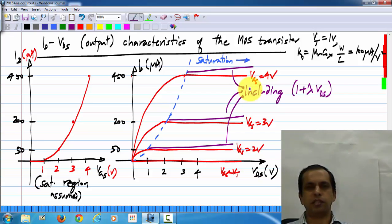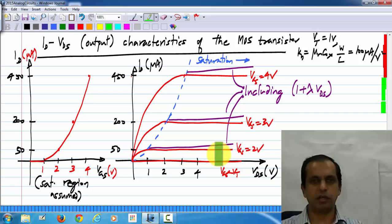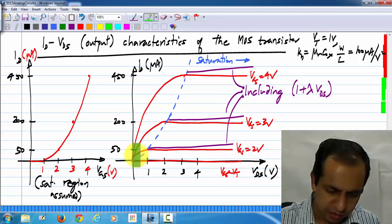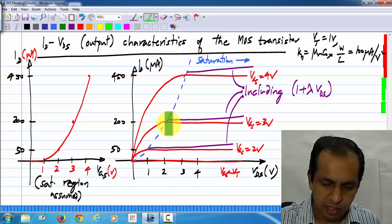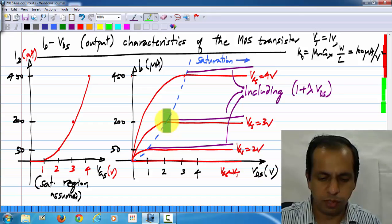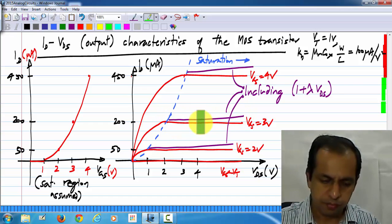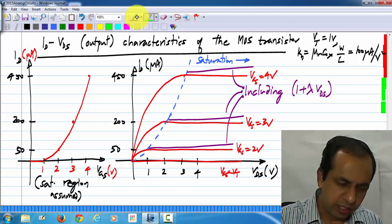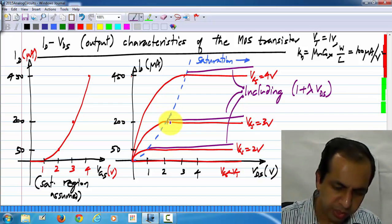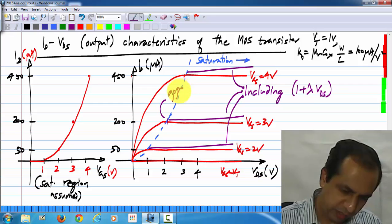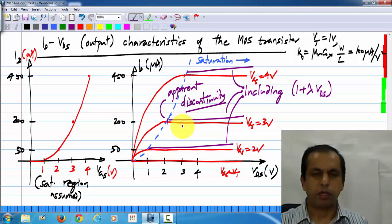So, this is the true characteristics of the MOS transistor. Now, you can quickly spot a problem here. I told you that this correction factor appears only for the saturation region and not for the triode region. Now, what happens is, you can see that the triode region remains as it is, and because at this point you multiply it by some number more than 1, because it is 1 plus lambda VDS. So, it appears that there is a discontinuity.